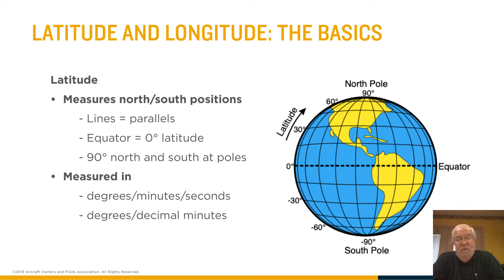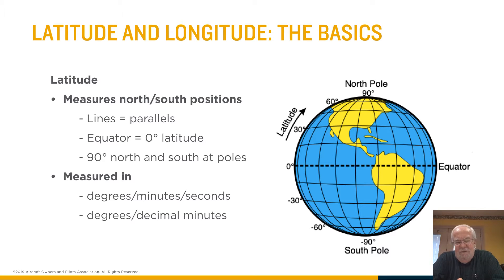We have a grid system covering the planet — any planet for that matter. There's one for Mars, there's one for the moon. The grid system is based on latitudes and longitudes. Latitude, as you can see in the graphic, consists of parallel lines starting with the equator as zero, the north pole being 90 degrees north, and the south pole being 90 degrees south. You measure them typically in degrees, minutes, and seconds, but you can also get more accuracy using degrees and decimal minutes. Later in the lesson we'll talk about how to convert from one to the other.